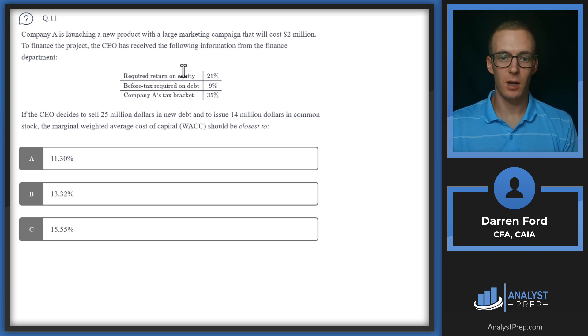We've got our required ROE, which will be our cost of equity or the discount rate. Before tax required on debt is 9% and the tax bracket is 35%, so we'll use this to compute cost of debt if we need to. If the CEO decides to sell 25 million dollars in new debt and issue 14 million dollars in common stock, the marginal weighted average cost of capital should be closest to.